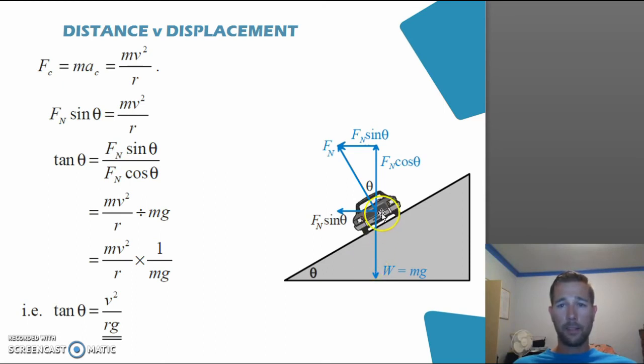However, when we looked at the vector components of the car, you can see that the centripetal force, Fn sin theta, is equal to the force that's keeping the car travelling in a circle. So these two forces are equal, and we've got our first equation.